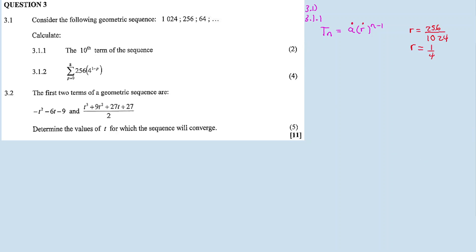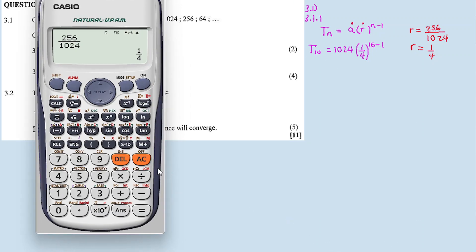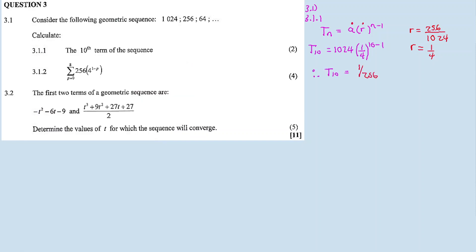Then I substitute into the equation for T10. So T10 is equal to 1024 times (1/4) raised to the exponent (10 minus 1), where we substitute n = 10. Therefore, calculating: 1024 times (1/4) to the exponent 9 equals 1/256. So T10 = 1/256. That is 3.1.1.